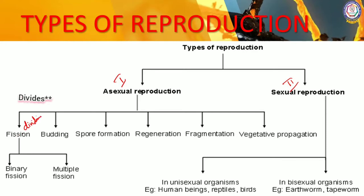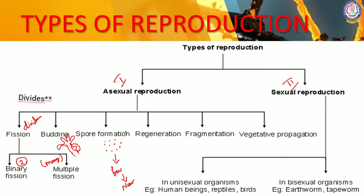The body divides into two or into many — based on that we give the name binary fission or multiple fission. Next, budding: the parent body will have a small bud-like thing that develops and detaches to become a new organism. Spore formation: a small reproducing unit seen in the air that develops into a new organism under favorable conditions. Regeneration means new life forming again. Fragmentation: the body divides into bits and each bit becomes a new individual.